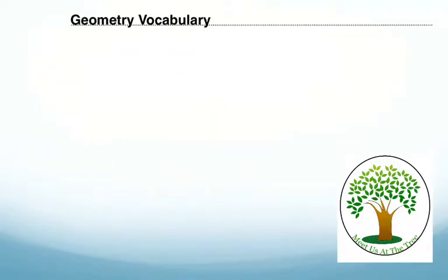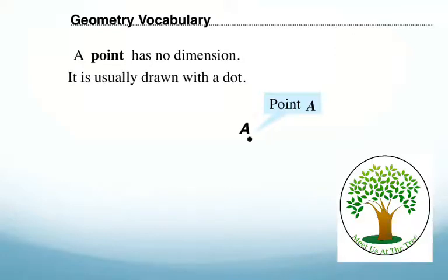Here we're going to start the vocabulary. We're going to start with what a point is. A point is a coordinate in space that has no dimension. It's usually drawn with a dot. I want you to notice that it's labeled with one letter, and that letter is a capital letter. This is point A. We don't write the word point A. We usually just call it A.